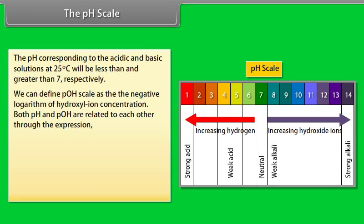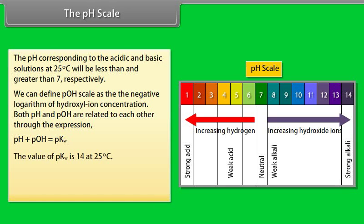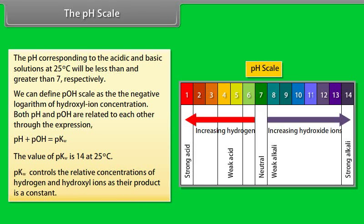We can also define the pOH scale as the negative logarithm of hydroxyl ion concentration. Both pH and pOH are related through the expression pH + pOH = pKw. The value of pKw is 14 at 25°C, and pKw controls the relative concentrations of hydrogen and hydroxyl ions, as their product is a constant.